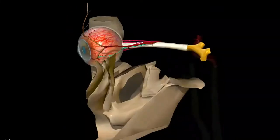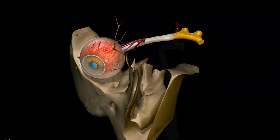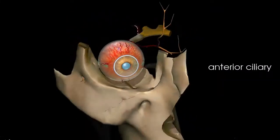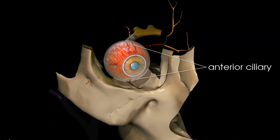Here you also have the anterior ciliary arteries, and within the choroid layer they anastomose with the long posterior ciliary arteries.